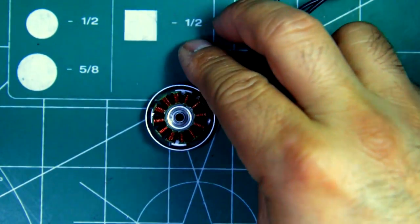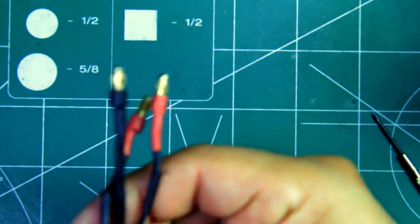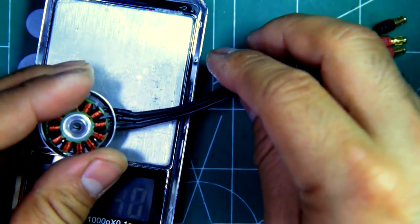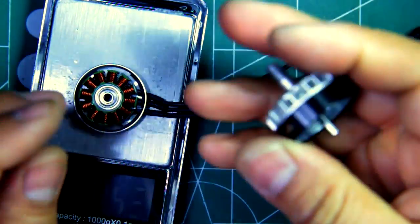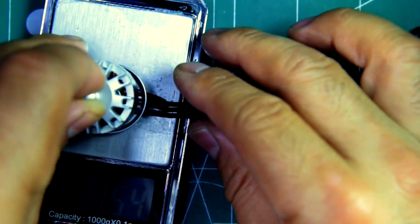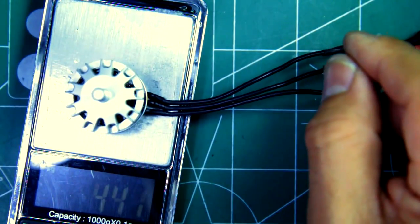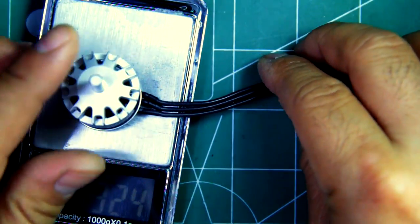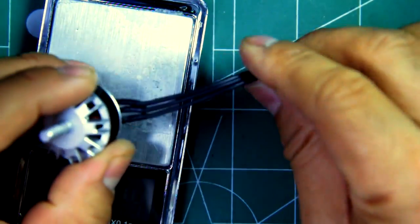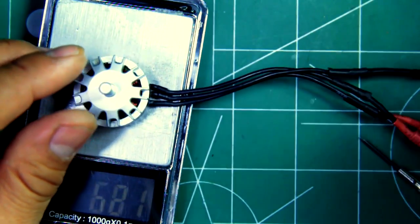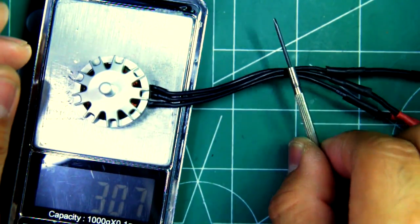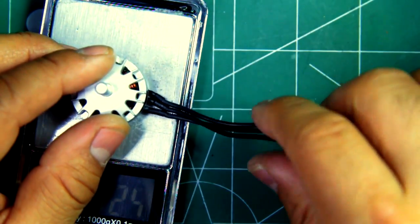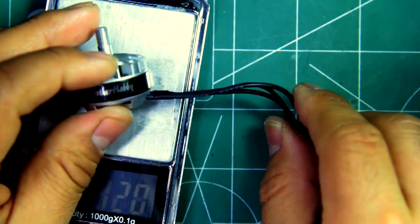So now let's see what this weighs. It does have these connectors attached, so I'm just going to let them rest here on the table. Let's see what the weight is for this motor, it's about 30 grams.